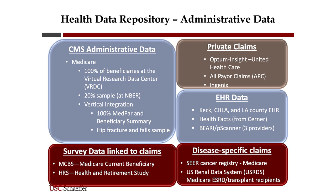For private claims, we have Optum Insight — it's Clinformatics, as they call it — which is United Healthcare, although I don't think they want us to say that. We also have the all-payer claims we talked about, and some very old claims in Genix that are only updated through 2009, so they won't get you published in JAMA.